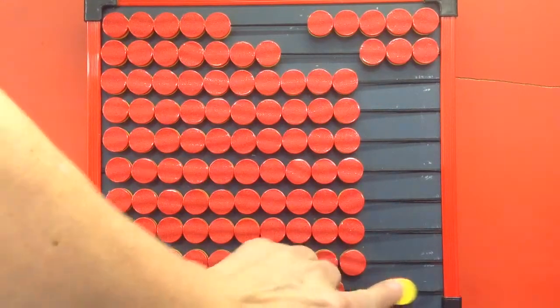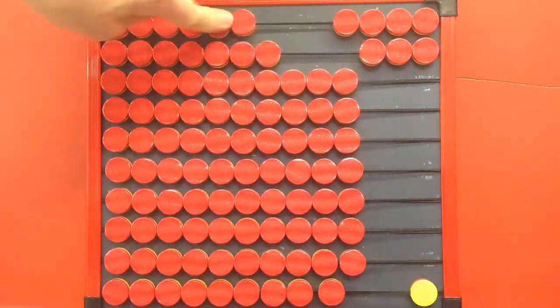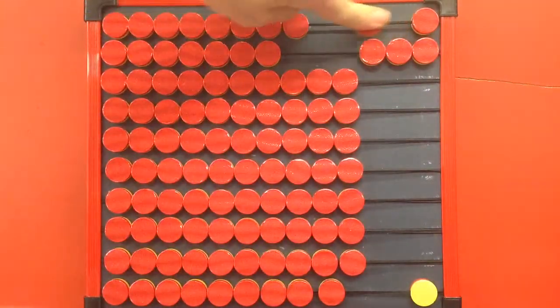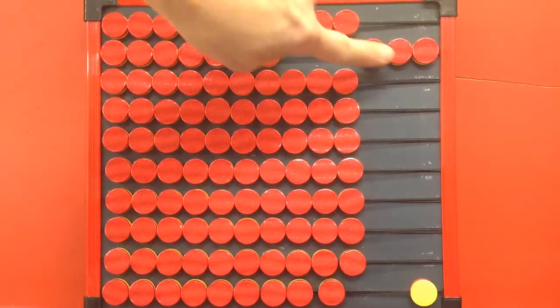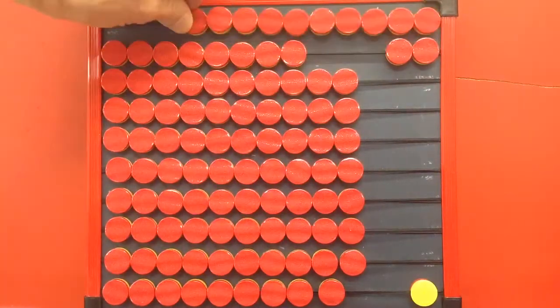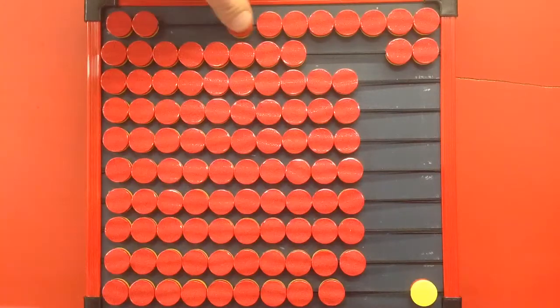35 divided by 8. 1, 2, 3, 4, 5. Exchange. 6, 7, 8. There's one.